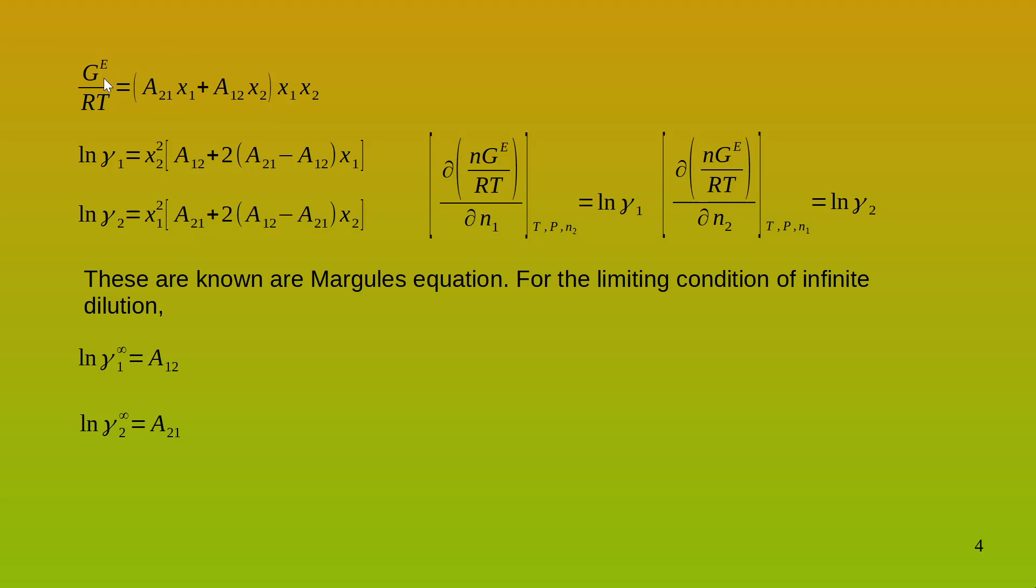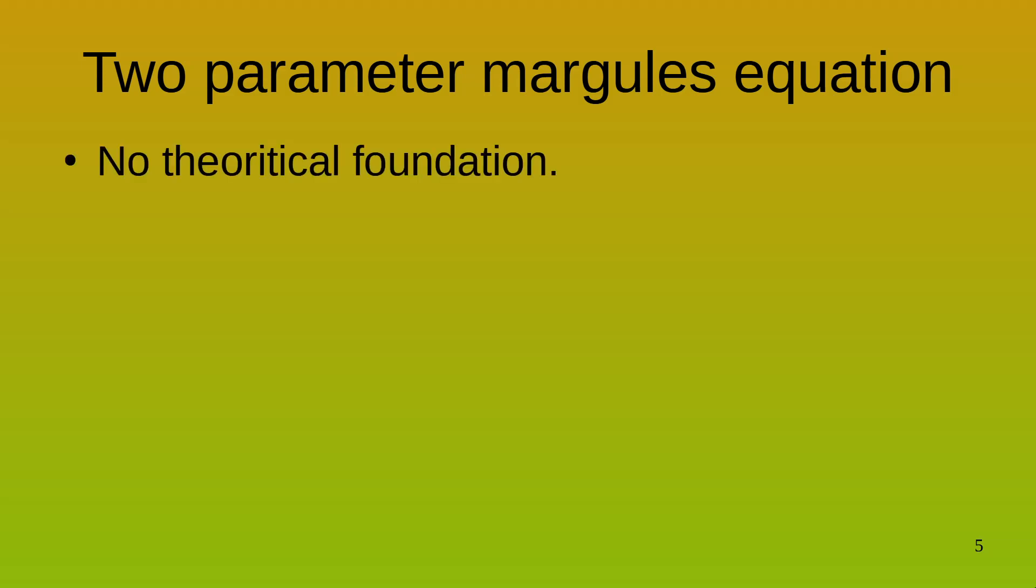Now this equation is known as the Margules equation and as discussed earlier, the limiting conditions for dilution are ln gamma 1 infinity is equal to A12 and ln gamma 2 infinity is equal to A21. What we saw was a Margules 2 parameter model. Please note that this has no theoretical foundation. I have merely taken the value of excess Gibbs free energy and fit it into a straight line to get the parameters. This has no theoretical foundation.